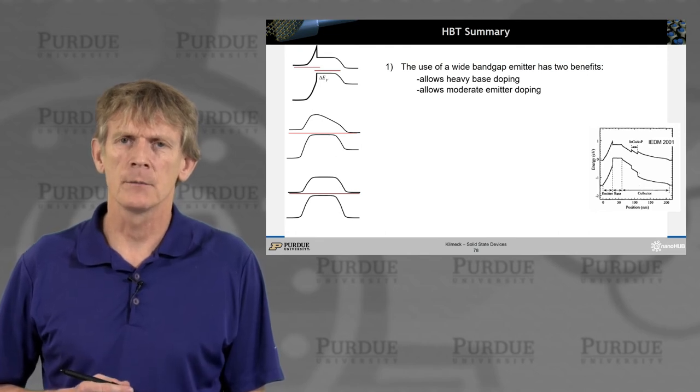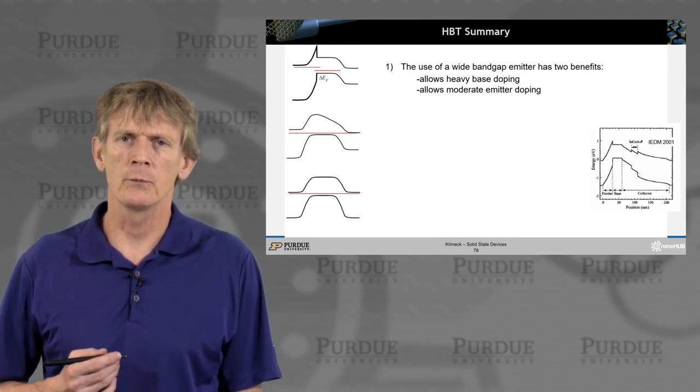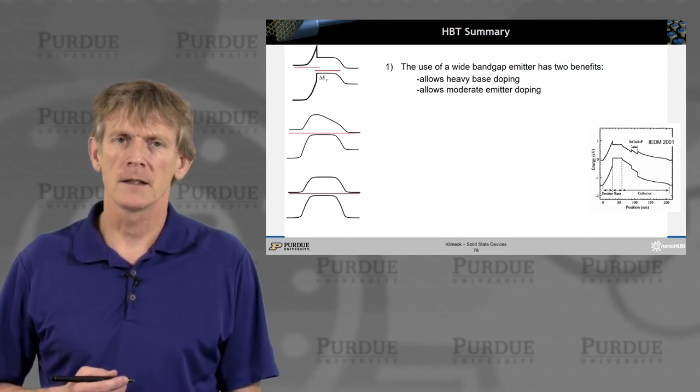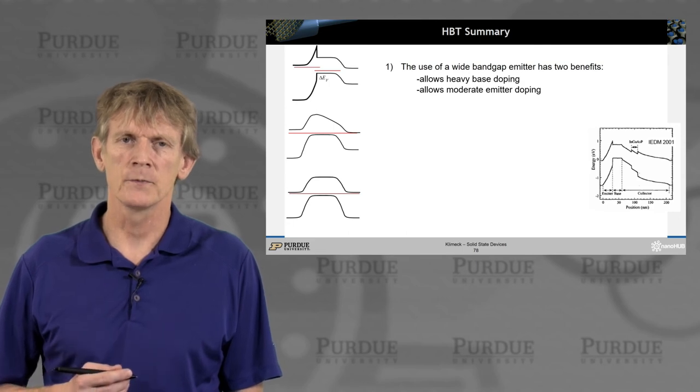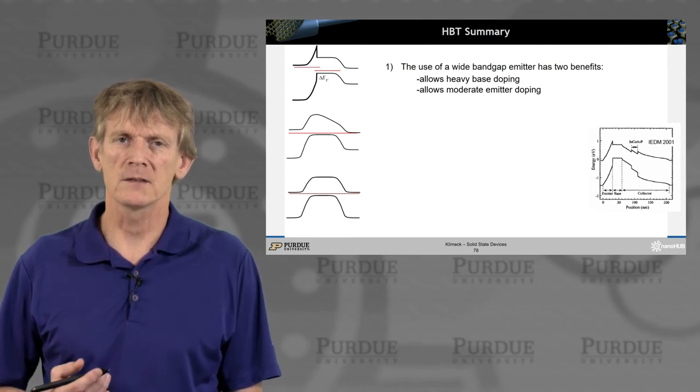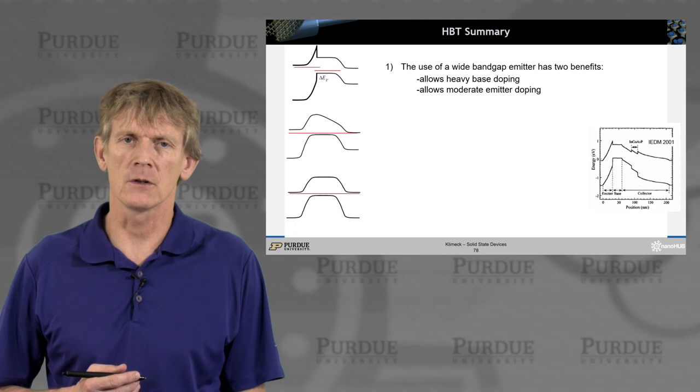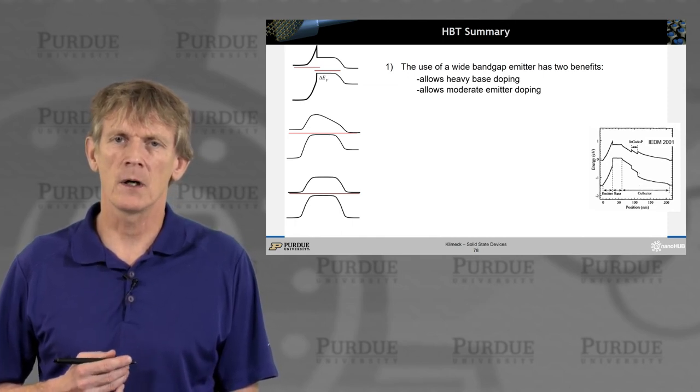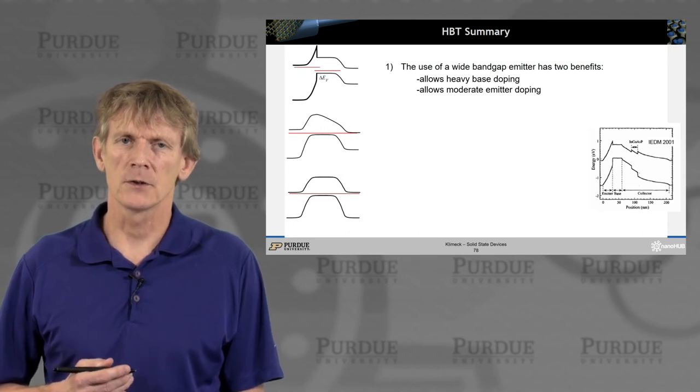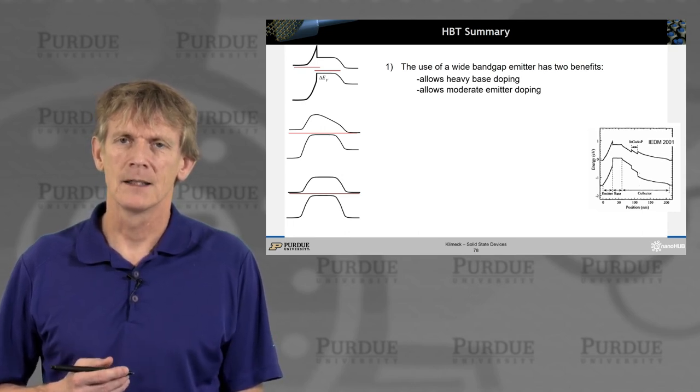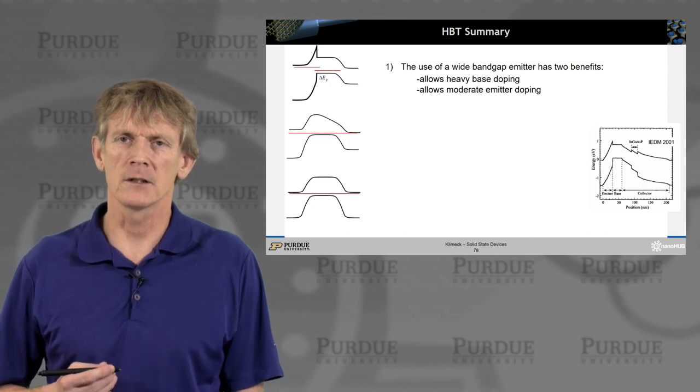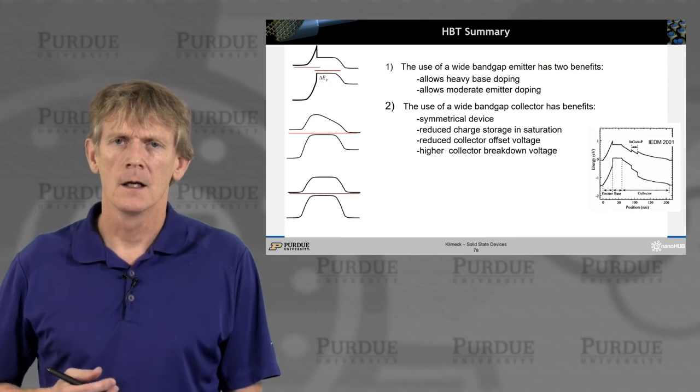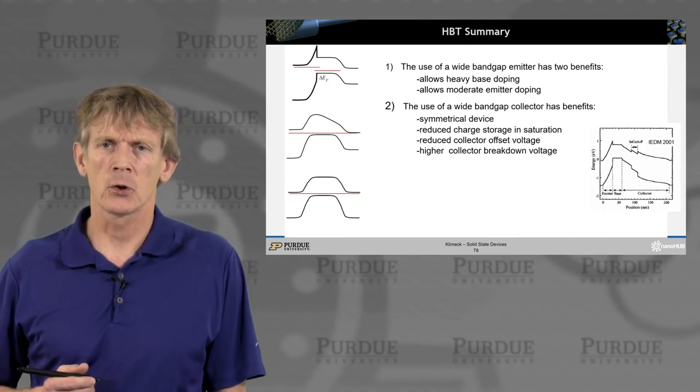So let's summarize what we've done in this overall section on HPTs. With a wider bandgap in the emitter, you can now dope the base heavily. And that meant you don't have punch through, you have no base modulation anymore, so your early voltage is large. And you can also have now moderate emitter doping as well. So you don't have this requirement anymore that the emitter doping must be larger than the base doping.